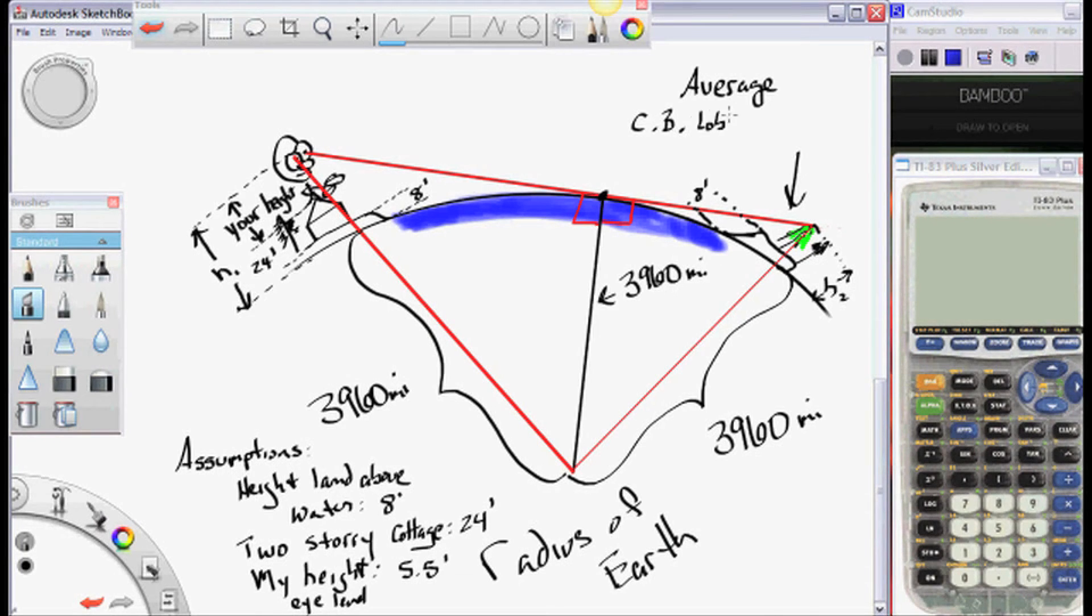The average Chesapeake Bay Loblolly Pine is 70 to 90 feet. So we need to add that to 3,960 miles.